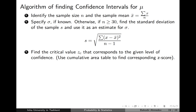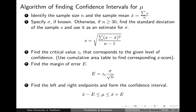Fourth, find the critical points corresponding to your confidence level: for 90% use plus or minus 1.645, for 95% or 99% find the corresponding critical points from the standard normal distribution table. Fifth, calculate the error margin using the critical point, sigma or s, and the square root of n. Finally, construct the confidence interval by subtracting and adding the error margin to the sample mean. This is how we construct confidence intervals for the population mean with large sample sizes.